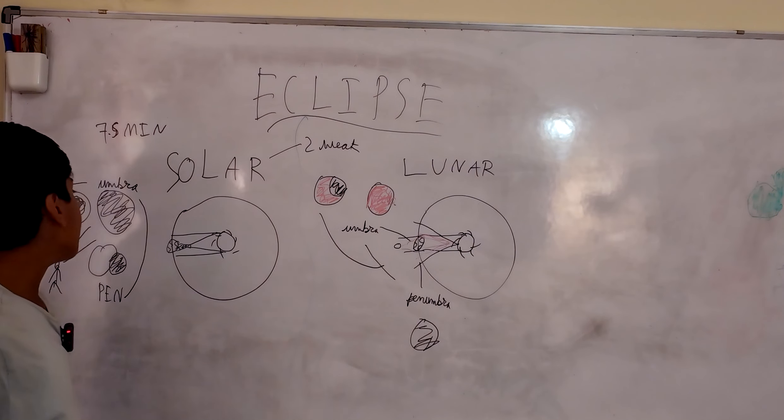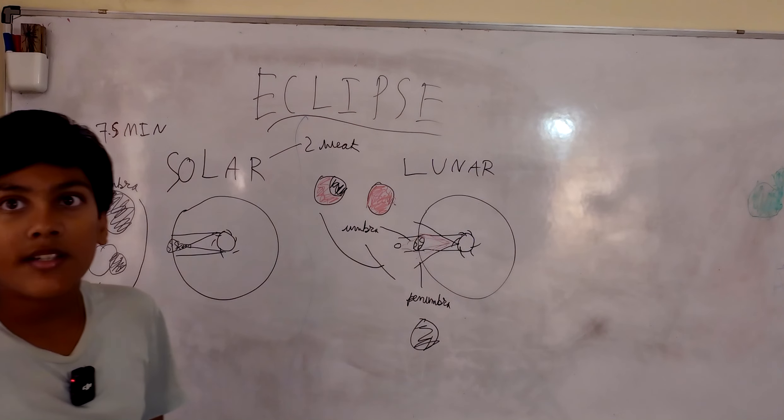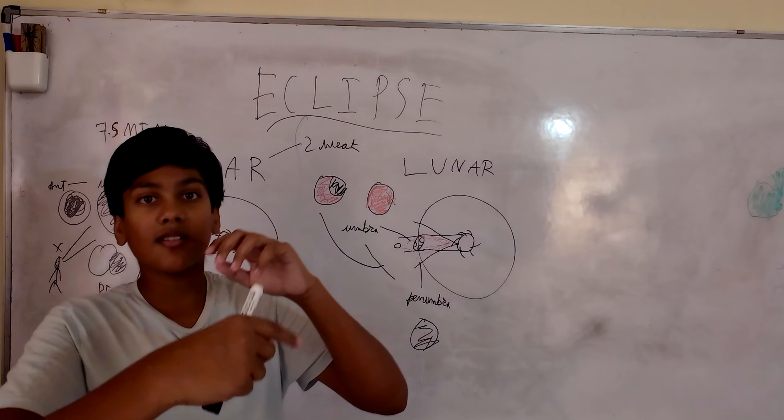Then the second one is the antumbra, which basically shows the moon covering the sun except you can see the sun's outline. This one is the most common.